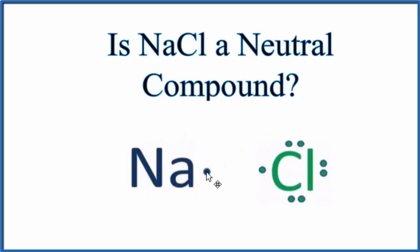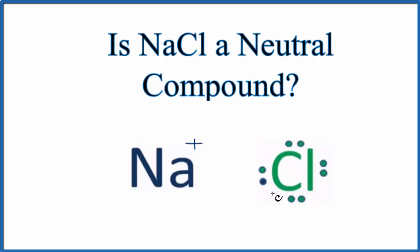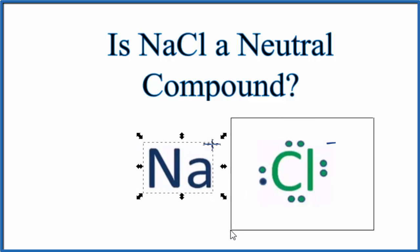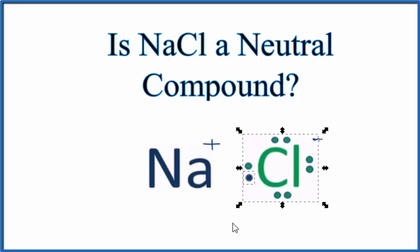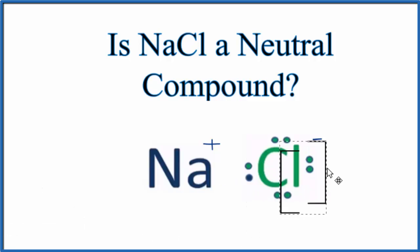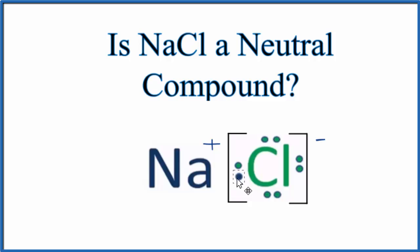Elements in group 1, like sodium, have 1 valence electron. Elements in group 17, sometimes called 7A, have 7 valence electrons. To achieve an octet, the sodium will transfer or lose an electron to the chlorine. So now the sodium lost an electron and becomes positive. The chlorine got that extra negative charge, so it's negative. Because we have a positive and a negative, they're attracted to each other — that's what forms the ionic bond. We put brackets around the chlorine to show that this electron was transferred; it's not shared between atoms like a covalent bond. This is ionic, so it's been transferred.